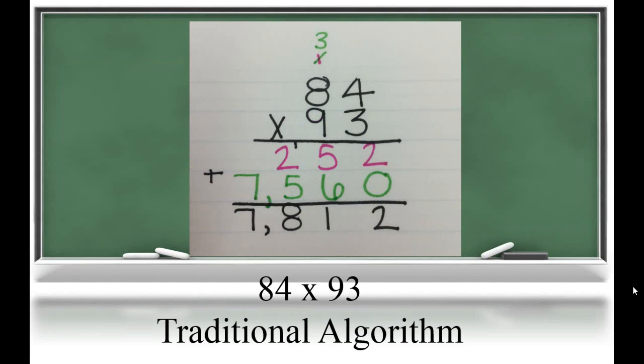Now students are ready to try the traditional algorithm for multi-digit multiplication. We're going to start multiplying in the ones place value. 3 ones times 4 ones is 12 ones, which can be regrouped into 2 ones and 1 ten. 3 ones times 8 tens is 24 tens, plus the 1 ten that we regrouped. 25 tens can be regrouped into 5 tens and 2 hundreds.